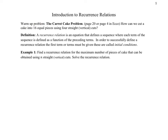A warm-up problem for you to think about is the carrot cake problem. How can we cut a cake? Think of our cake as a circular cake — if you're looking at it from the top down you'd see this circular cake. Our job with this problem is to make 16 equal pieces using four straight vertical cuts. Equal means all pieces have to be exactly the same size, and we're not allowed to swirl our knife around. If you just start from the top and chop your way down, we're going to call that a straight vertical cut.